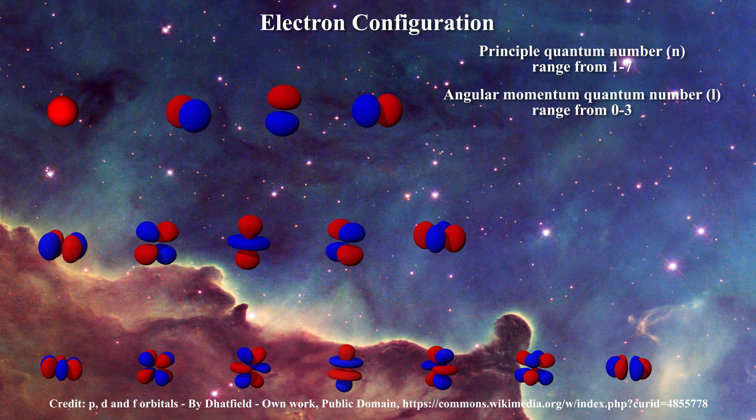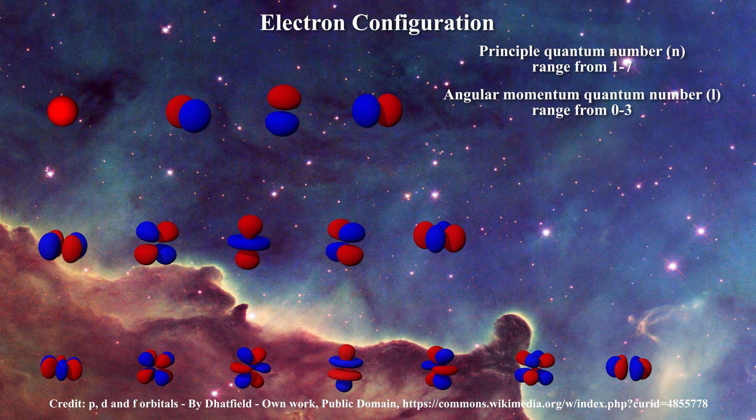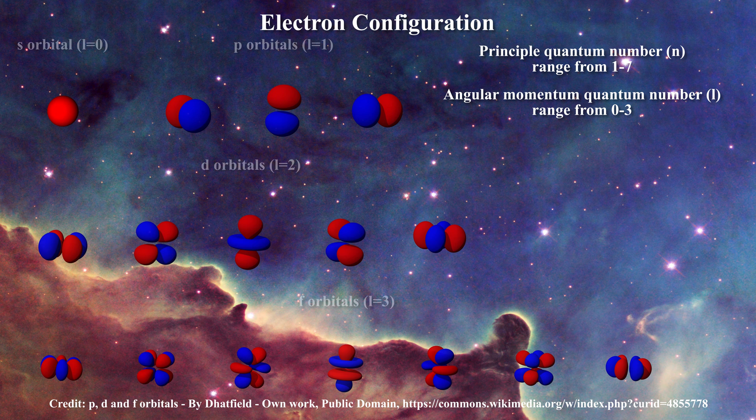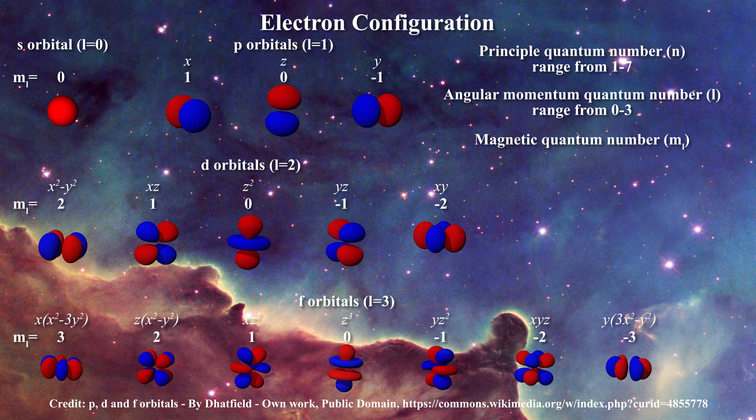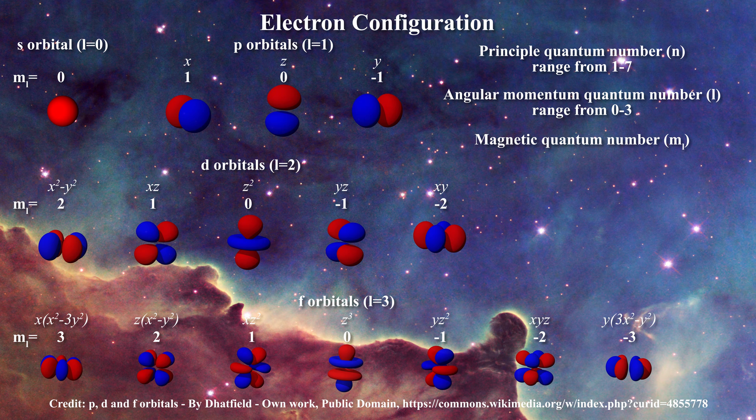The second quantum number is called the orbital angular momentum quantum number, or little l. It defines the shape of the orbital. As a result there are four types of electronic orbitals, namely s, p, d and f, as represented here. Each of these electronic orbitals is also characterized by a magnetic quantum number m sub l, which is associated with the spatial orientation of the orbital.